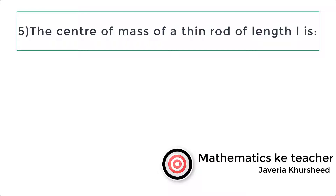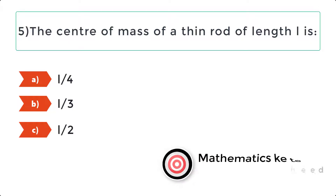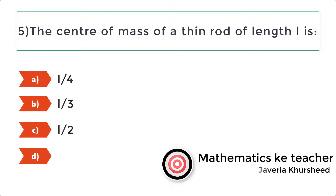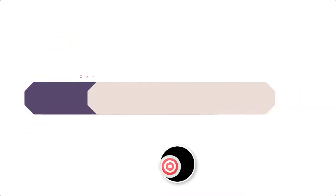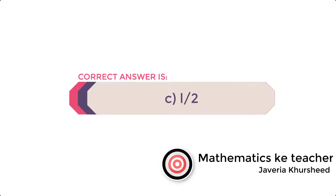Question 5: The center of mass of a thin rod of length L is: A. L/4, B. L/3, C. L/2, D. None of these. Correct answer is C: L/2.